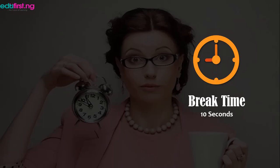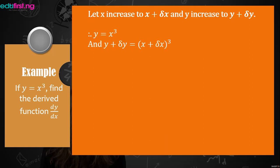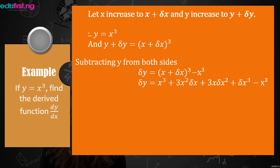Let's proceed with an example. If y equals x cubed, find the derived function dy/dx. Let x increase to x plus delta x and y increase to y plus delta y. Since y equals x cubed, the equation becomes y plus delta y equals (x plus delta x) cubed. Subtracting y from both sides, delta y equals (x plus delta x) cubed minus x cubed.